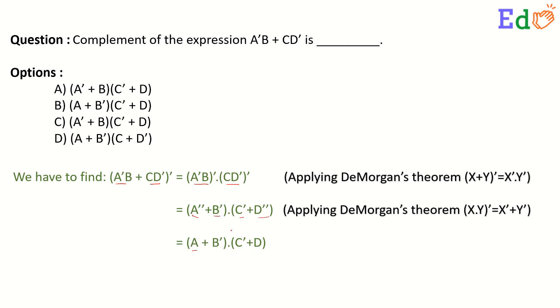The entire dot product is A plus B complement dot C complement plus D. And the correct answer to the question is option B.